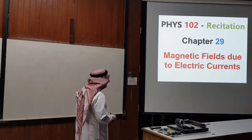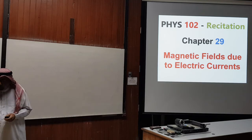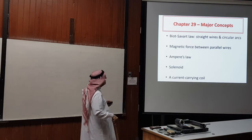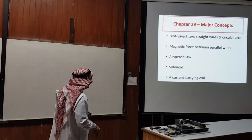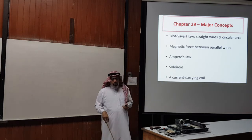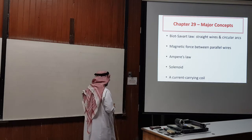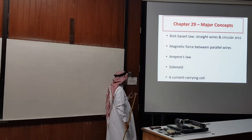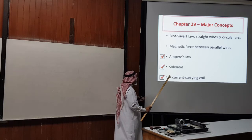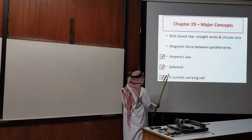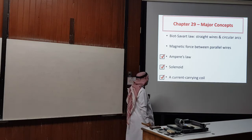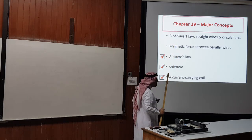Today we have our recitation on Chapter 29, which is about the magnetic fields produced by electric currents. The major concepts we covered in the chapter were using the Biot-Savart law to find magnetic fields due to infinitely long straight wires and several arcs, then the magnetic force between parallel wires, Ampere's law and its applications to cylindrical wires, the solenoid, and a current-carrying coil. The focus in this recitation will be on the first two concepts.